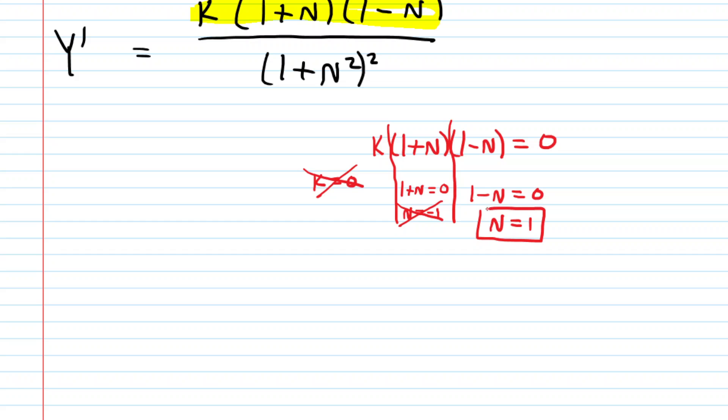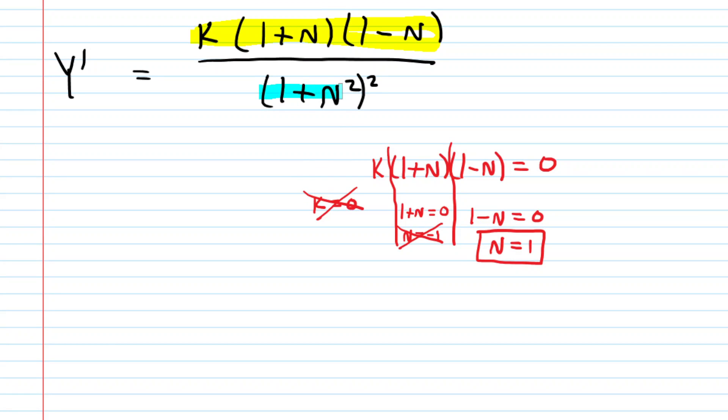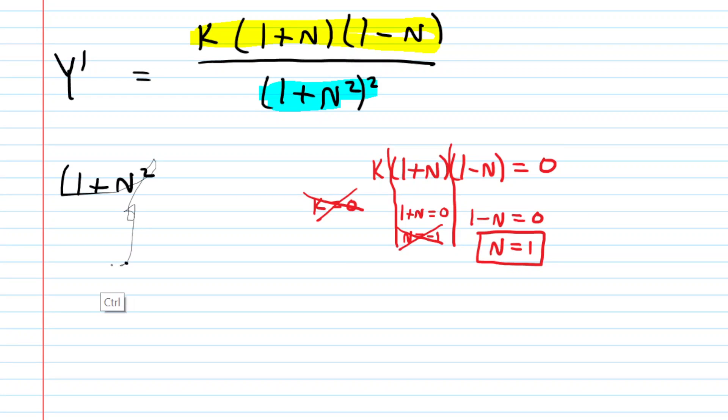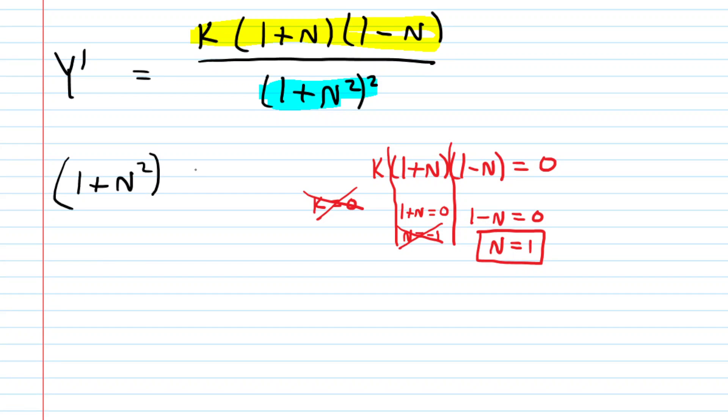We don't know if this maximizes the yield yet, but it is a critical number. We mentioned that not only would the derivative equal 0, you also have to check where the derivative is undefined. Undefined would mean that the denominator equals 0. You cannot divide by 0. We take our denominator and set it equal to 0. This gives 1 plus N squared equals 0. Subtract 1 and take the square root. You have the square root of negative 1, which equals plus or minus i. We are not interested in imaginary values for nitrogen levels. The only critical number is N equals 1.